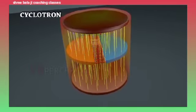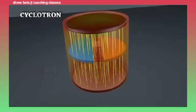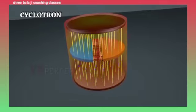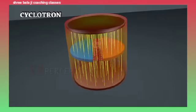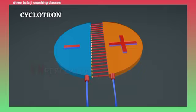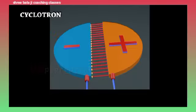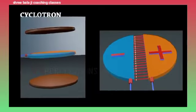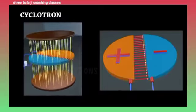This entire arrangement is sealed in a vacuum box. The two D's create an electric field. The direction of electric field is horizontal. The direction of magnetic field is vertical.